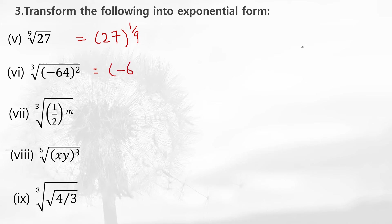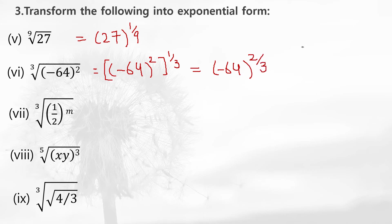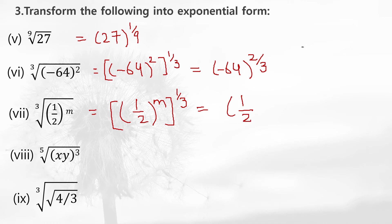Here there is a cube root, and the radicand is written with the power 2. The cube root is written as 1 by 3. Multiplying these powers: minus 64 with exponent 2 gives minus 2 by 3. Similarly, the next one has cube root with radicand 1 by 2 to the power m. You write 1 by 2 to the power m, and the cube root gives 1 by 3, so the final exponent is m by 3.